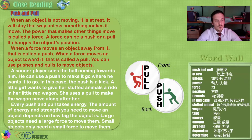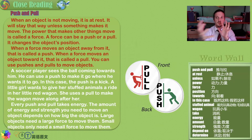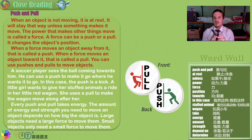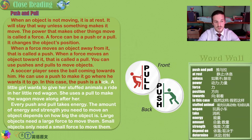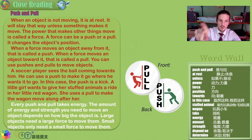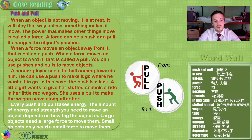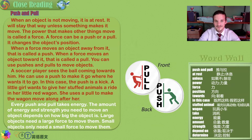When a force moves an object toward it, that is called a pull — an attraction because it brings them together. You can use pushes and pulls to move objects. A soccer player sees the ball coming towards him and can use a push — in this case, a kick — to make it go where he wants. A little girl wants to give her stuffed animals a ride in her little red wagon and uses a pull to make the wagon move along after her. Push and pull.